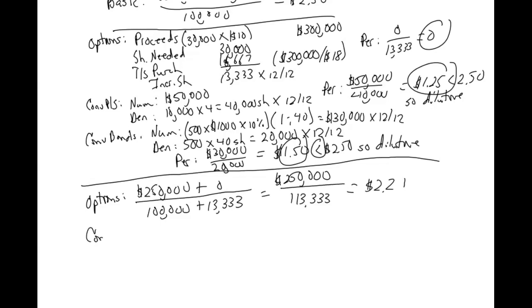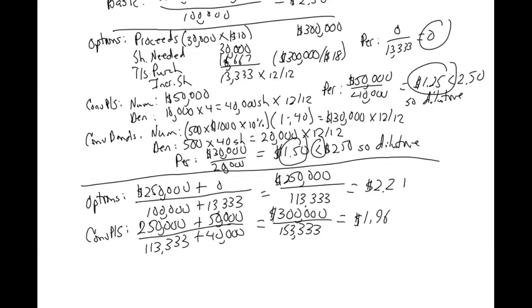The convertible preferred stock is next. We start with the $250,000 over the 113,333. And we're going to add in the $50,000 on top here and the 40,000 on the denominator here. So that brings me to $300,000. And that's over 153,333. So that brings it down to $1.96. So we keep going.